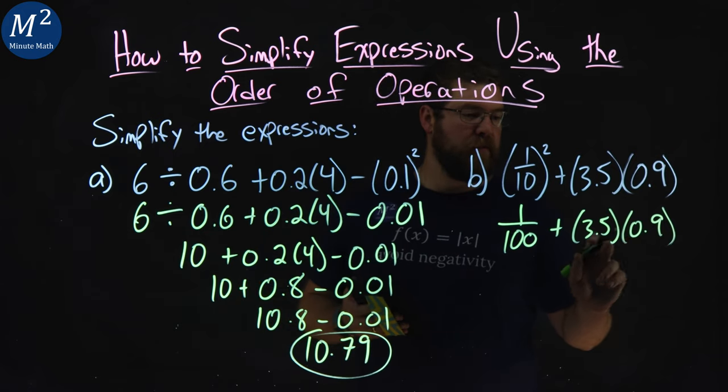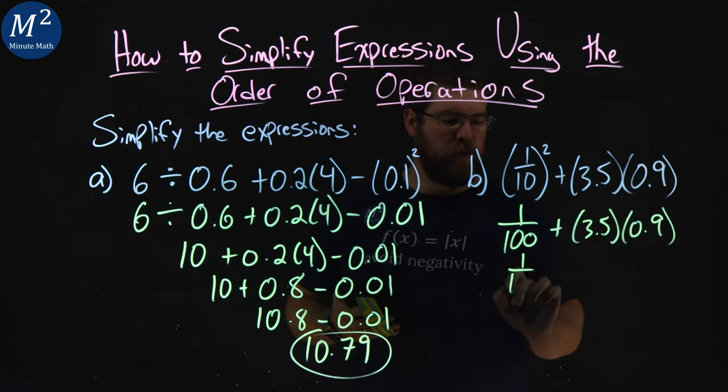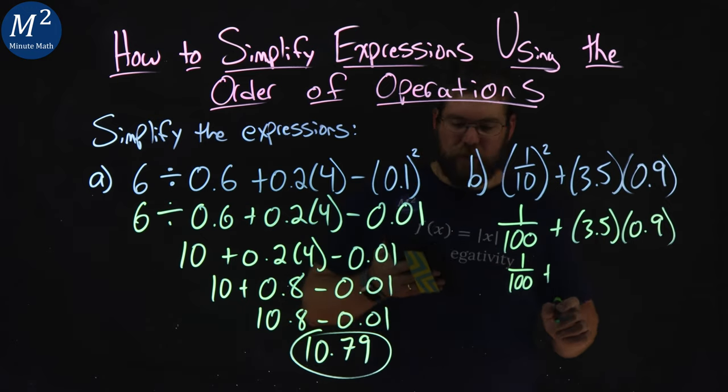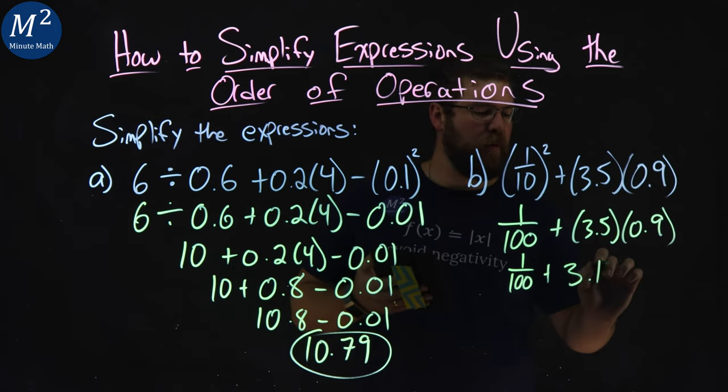Now, multiplication comes next, these two numbers being multiplied. So 1 over 100 comes down, plus 3.5 times 0.9 comes out to be 3.15.